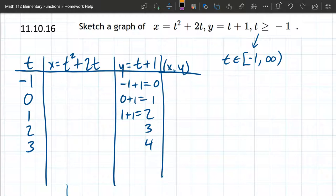And I've already lined up our increasing t values from negative 1. Now I didn't go all the way to infinity, I stopped at 3. You may need to go a little further than 3, but I think this will be enough for our graph.